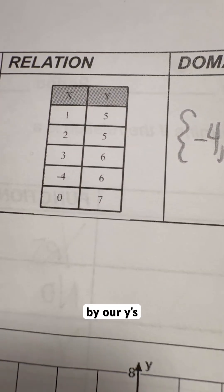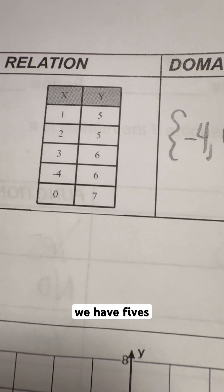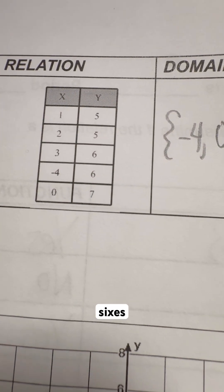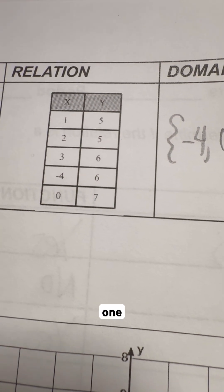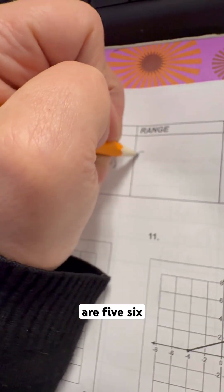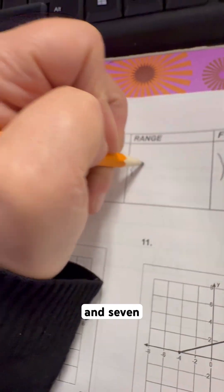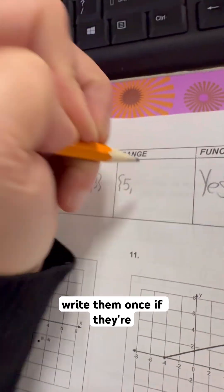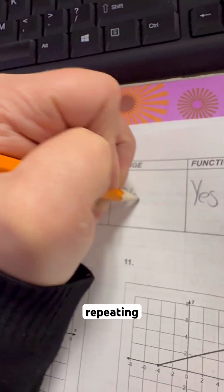For our y's, we have 5 repeated, 6 repeated, and 1 and 7. So our range numbers are 5, 6, and 7. Only write them once if they're repeating.